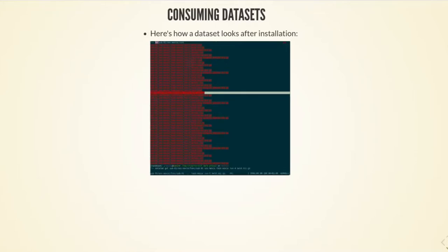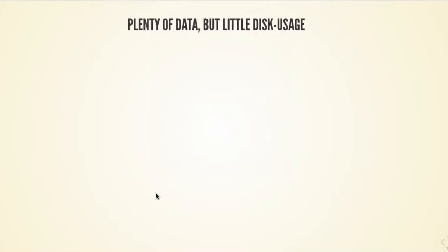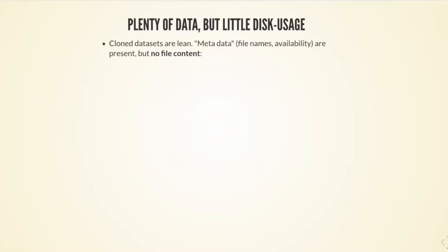Importantly, it was really fast, and the contents of these files need to be retrieved in order to actually trigger the download that obtains the data they track. A datalad get command on any of those files, any directory, or the complete dataset will trigger the download necessary to actually obtain the version-controlled large file contents. That's a little counterintuitive if you're used to cloning Git repositories, because when you clone a Git repository you can see the contents of files. With DataLad datasets, this is not always the case.